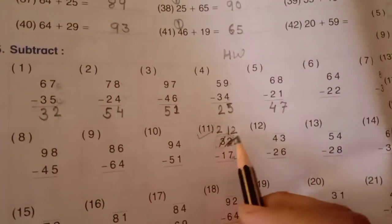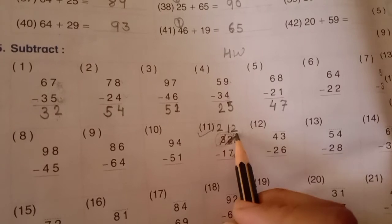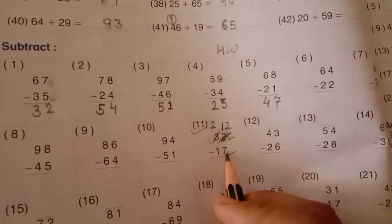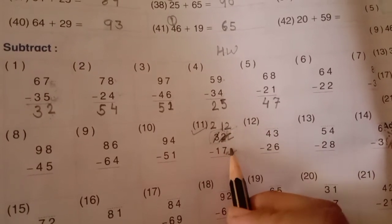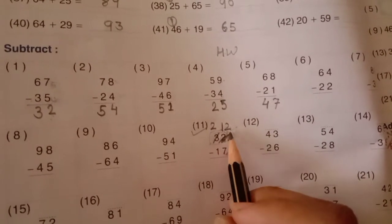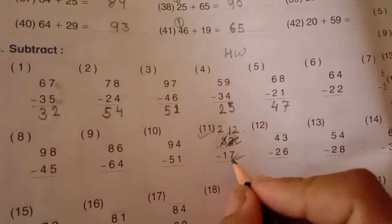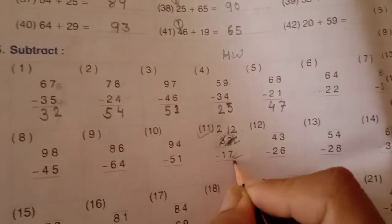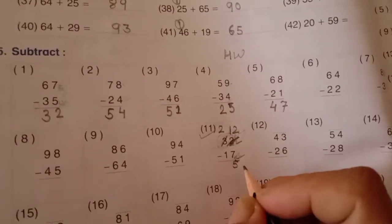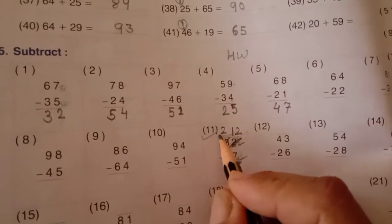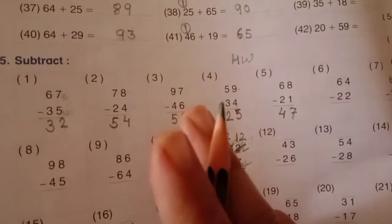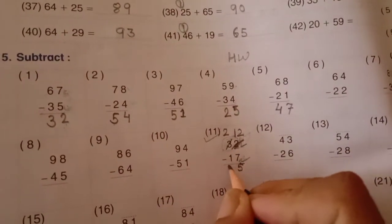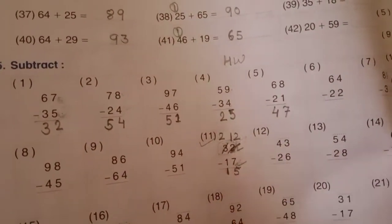Now, it is 12. We get 12 number. अब हमें 12 number मिल गया. अब 12 में से minus 7 subtract कर सकते हैं. अब 12 bigger value हो गई और 7 small value. 12 में से 7 subtract करेंगे. So, 12 में से आप 7 subtract करोगे — how much remaining here? 5. Now, 2 minus 1. 2 finger है, उसमें से 1 finger less कर दो — how much remaining here? 1. So, we write here 1.